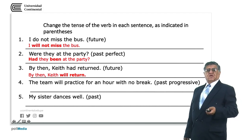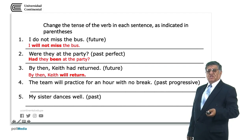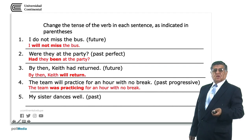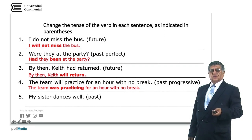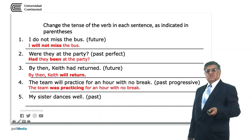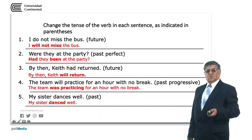For number four: the team will practice for an hour with no break — in the past progressive, this becomes the team was practicing for an hour with no break. Was is the verb to be for the singular subject, and practicing is the -ing form of the verb. For number five: my sister dances well — dances is the past form of this regular verb.